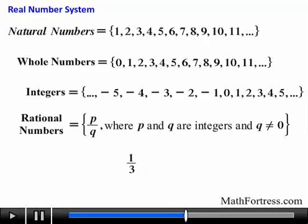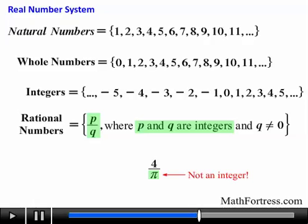Examples of rational numbers include the number one-third, the number negative 8 over 5, and the number 5 over 1. Note that 5 over 1 reduces to 5, so this means that all integers are rational numbers. A number like 4 over pi is not a rational number because pi is not an integer. Remember, rational numbers have the form p over q, where both the numerator and denominator have to be integers.